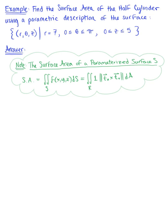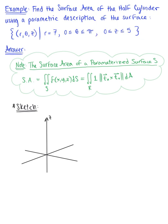Find the surface area of the half cylinder using a parametric description of the surface. The first thing I'm going to do is sketch this region to think about what's going on. We want to sketch a half cylinder in three dimensions. We have a radius of 7, theta is bounded between 0 and pi, and the height of our cylinder is 5.